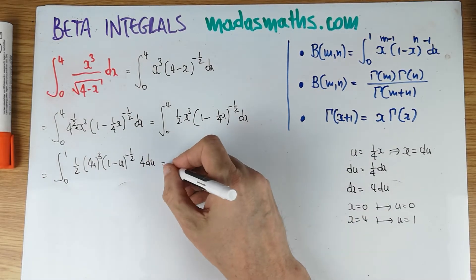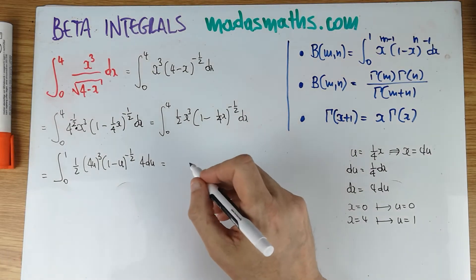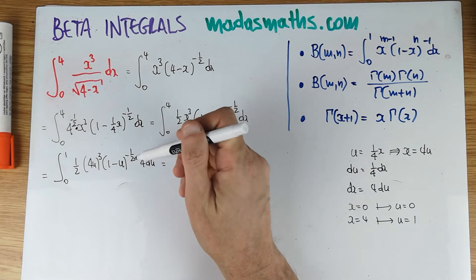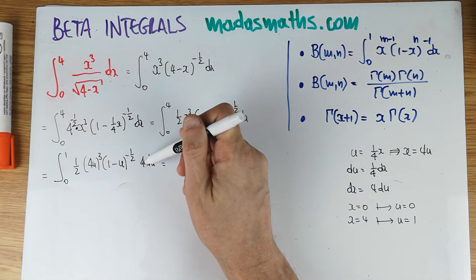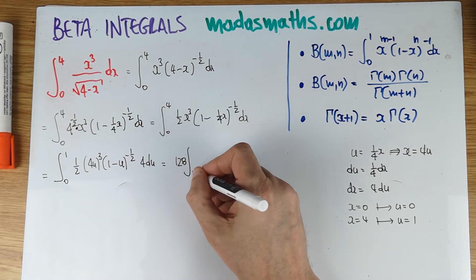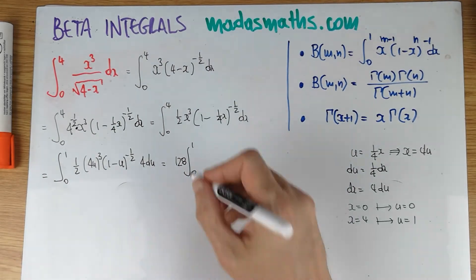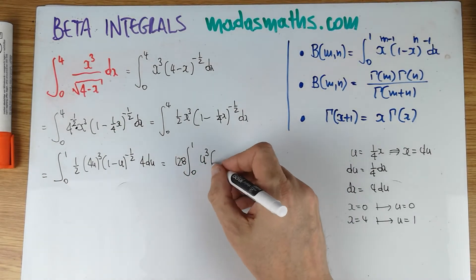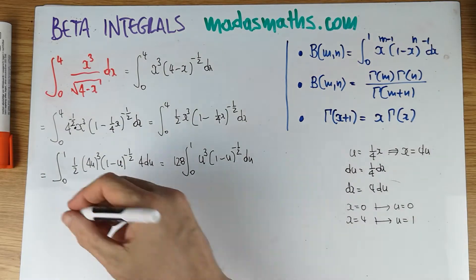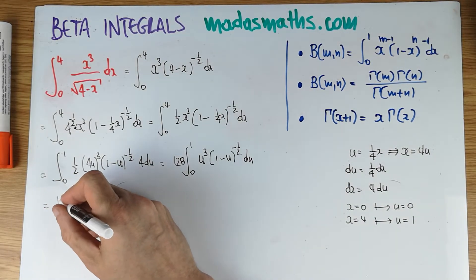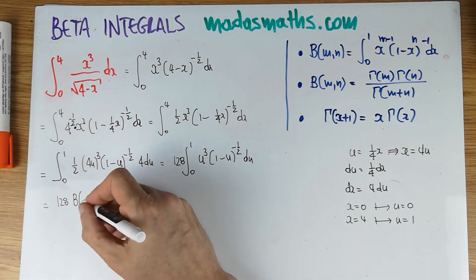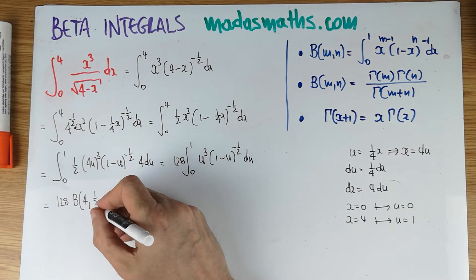Let's also sort out some of this mess because a lot of numbers in here. That is equal to... I'm going to pull them outside. So I've got 64 times 4, which is 256, half of 256, 128. So 0 to 1. And what I've got left in there is u cubed, 1 minus u to the power of minus a half du. And this is now a standard beta function. So that is equal to 128 beta. One more of this. That's the beta of 4. And one more of this. That's the beta of a half.